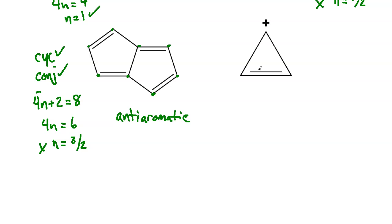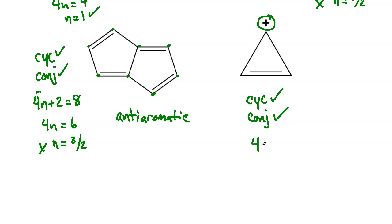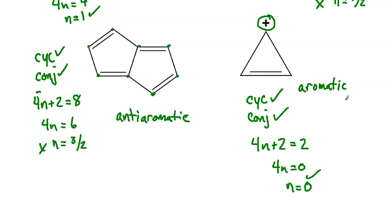Finally, we have a three-membered ring with a carbocation. When you have a cation, you've lost a set of electrons and instead of sp3 you go into an sp2 state, contributing an empty p orbital to the conjugation. So this is cyclic — yes. Conjugated — yes, because the carbocation sits in a p orbital that's in resonance with the pi bond. For Hückel's rule: 4n + 2 = 2 (only the one double bond). Then 2 − 2 = 0, so 4n = 0 and n = 0 — a valid whole integer. This compound is aromatic.